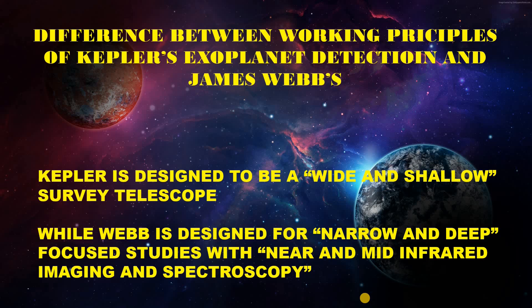How will the Webb detect life? That is the main question. If life exists outside of Earth, it will release distinct chemical signatures — such as breathing carbon dioxide and photosynthesizing out oxygen — that can transform a planet. Analyzing the chemicals in a planet's atmosphere will not only allow scientists to look for life but also enable them to assess a planet's habitability.